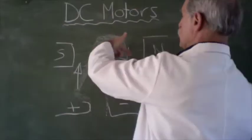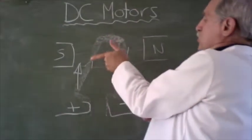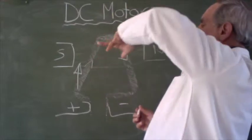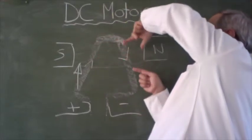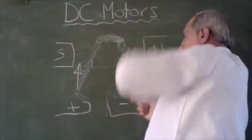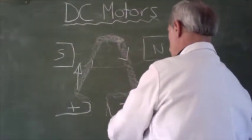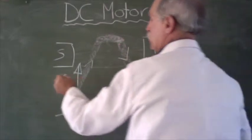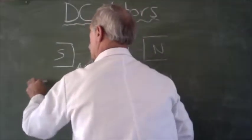Now, the current goes around here. Our field is still from north to south. But now, our current is coming in this direction out of the board. So our thrust will be downwards on this side. The thrust will be down on this side. And our thrust will be up.